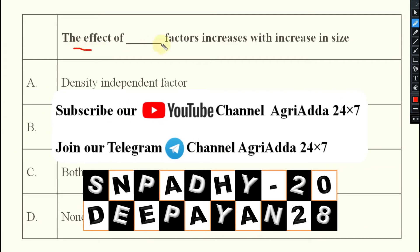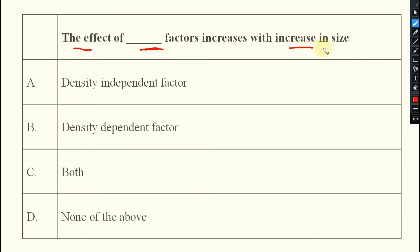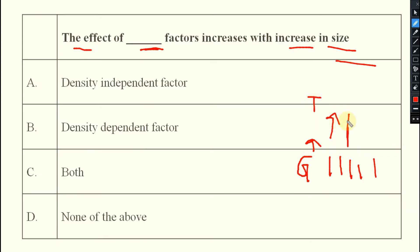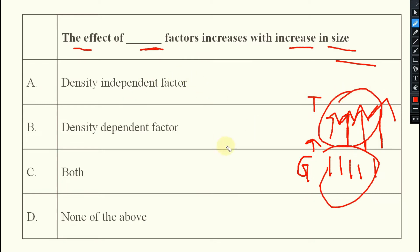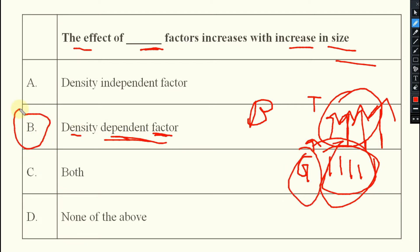The first question: the effect of this factor increases with increase in size. Suppose there are goats and the population is more — if the goat population increases, what happens to the tiger population? They will also increase. So the effect of this factor increases with increasing size, meaning it comes under biotic factor — that is, density-dependent factor, where the factor is dependent upon the density of the target organism.